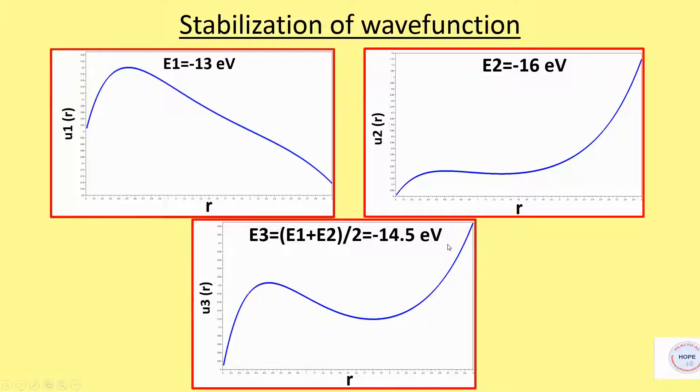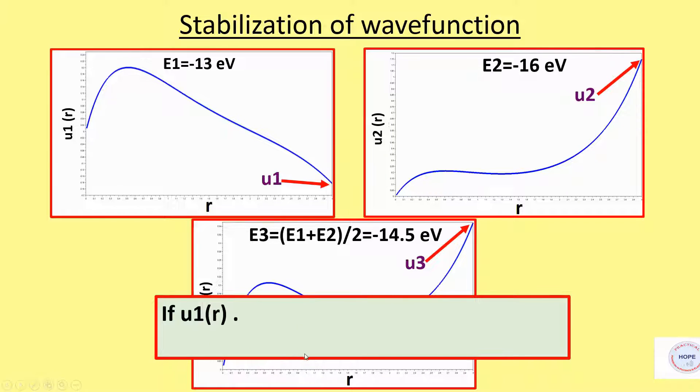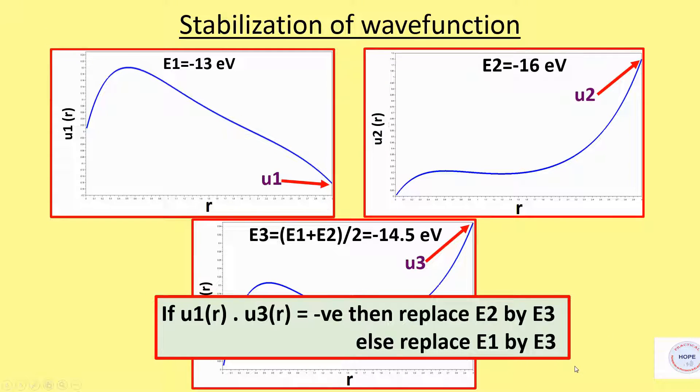Now in programming, it is very simple to do this. We will take some suitable range of r, evaluate the last value of U1, U2, U3, that is the wave functions for different values of energy. Then we use this condition that if U1 dot U3 is negative, then replace E2 by E3, else replace E1 by E3.